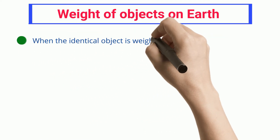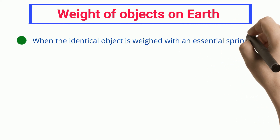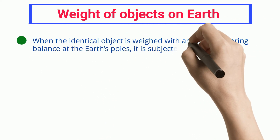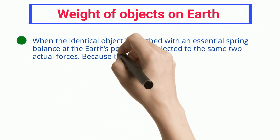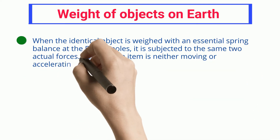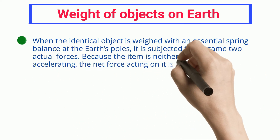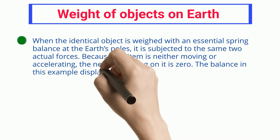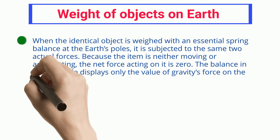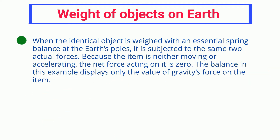When the identical object is weighed with a spring balance at the earth's poles, it is subjected to the same two actual forces. Because the item is neither moving nor accelerating, the net force acting on it is zero, and the balance displays only the value of gravity's force on the item.